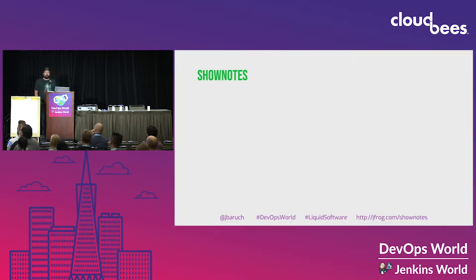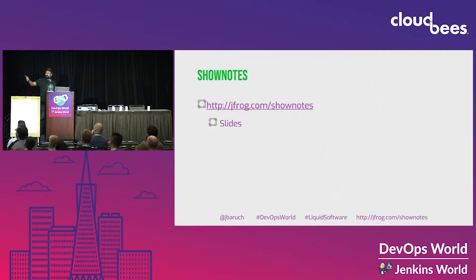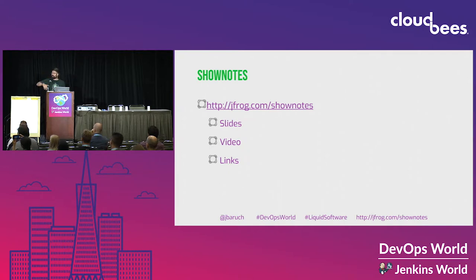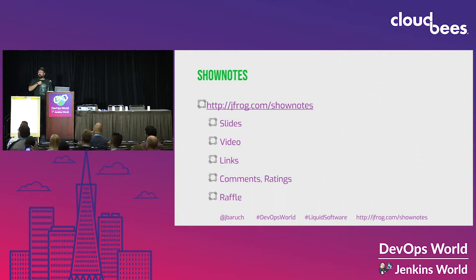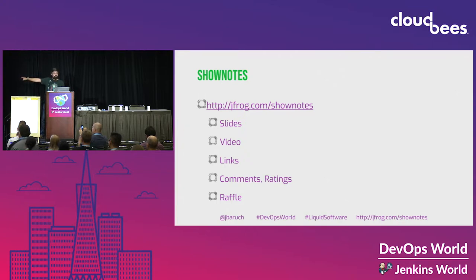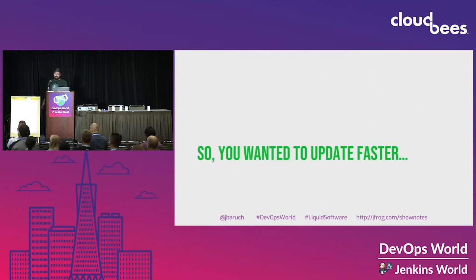The most important slide of this talk: I prepared a special page at jfrog.com/show-notes. You'll find all the slides, the video, all links including the Culture Map and the vulnerability story, what is a window of vulnerability and why Spectre isn't curable. There are also comments, ratings, and a raffle for an Amazon Echo Dot. The link is on the bottom of every slide. When you praise on Twitter, use the DevOps World hashtag and the Liquid Software hashtag.